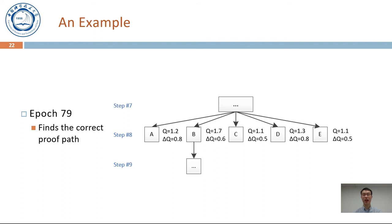Finally, in epoch 79, our strategy selects B in step 8 and finds a correct proof path. In this epoch, B's Q-value is much higher than its siblings. Based on the Q-values, SmartVerif automatically finds the node with supporting lemma B, such that the protocol can be verified without any user interaction.